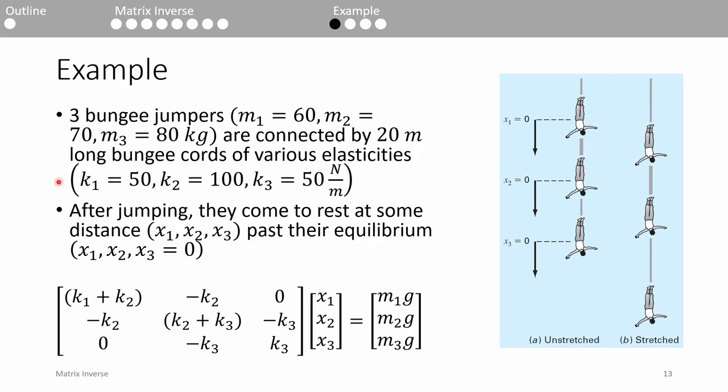After they jump, they come to rest at some position below their equilibrium position. You can draw a free body diagram of each jumper, but I'll spare you the math and you eventually end up with this system of equations. You can type x equals a backslash b in MATLAB to find the three values, but let's hold off on actually doing that for now.